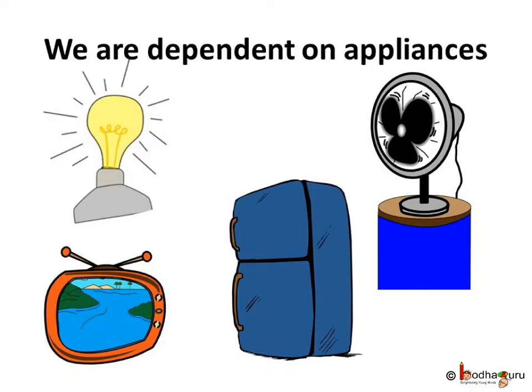Appliances like fan, light bulb, TV, refrigerator etc are very important for us. How important are these? Imagine you are living in a house without any fan, bulb, TV. How would your life be? Today we can't live without these appliances. We can't imagine our life without them.